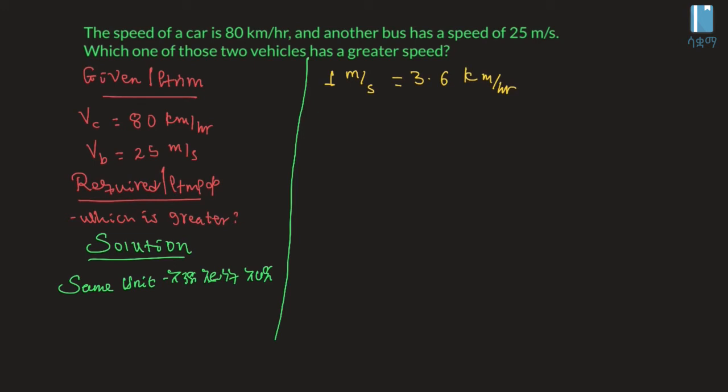The speed is 25 meters per second. Here we're going to convert this. If x times 1 meter per second equals how much in km per hour, then x times 1 meter per second equals 3.6 km per hour.